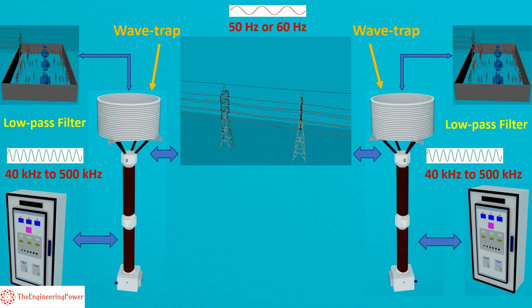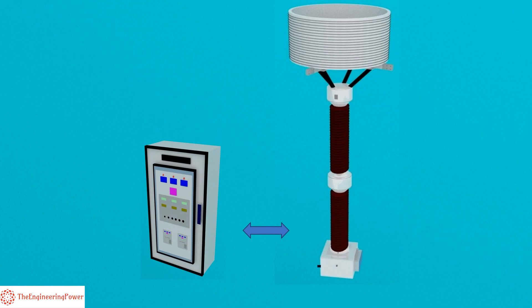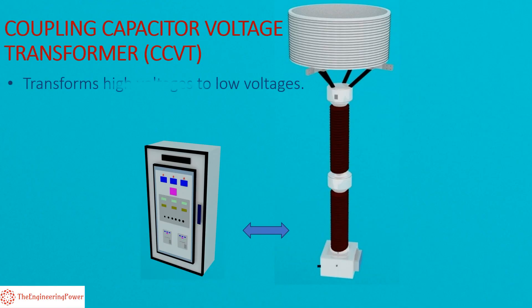A wave trap is basically a low-pass filter which passes the low frequency power voltage and stops or traps the high frequency PLCC signals from entering into substation yard, therefore known as wave trap. So CVT combined with PLCC equipment and wave trap makes the CCVT. CCVT performs two functions: it transforms high voltages to low voltages for protection and metering purposes just like CVT and PT, and secondly it couples PLCC equipment with high voltage power lines for telecommunication and teleprotection purposes. Hopefully the difference between PT, CVT, and CCVT is clarified in this video. Keep in touch for more such videos.